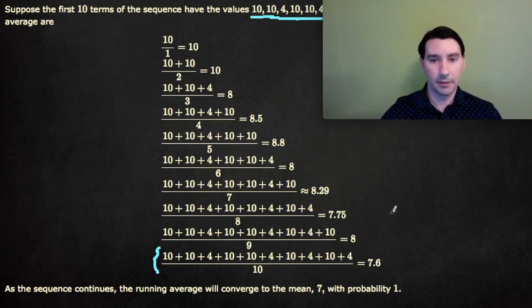If they're not independent, for example, if they all had to be equal to the same number, and we got a 10, then they're all 10s, and so it's not going to converge to 7.